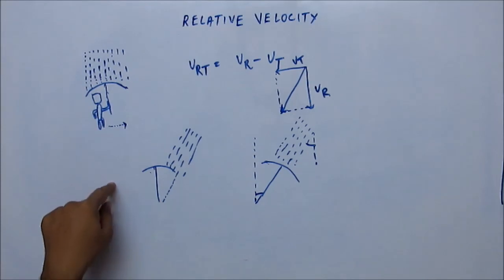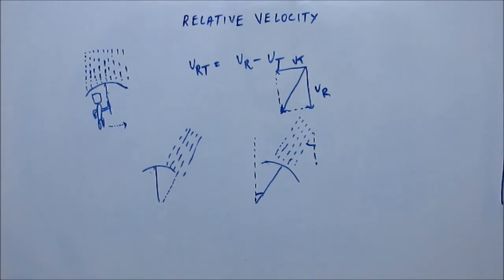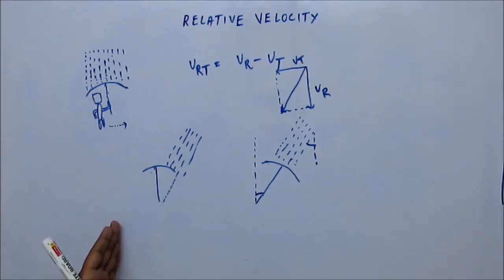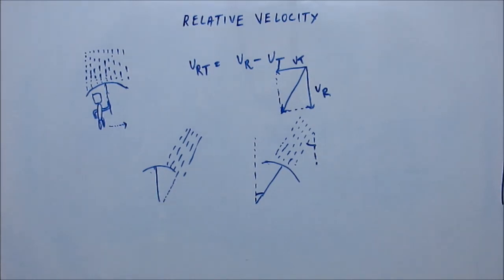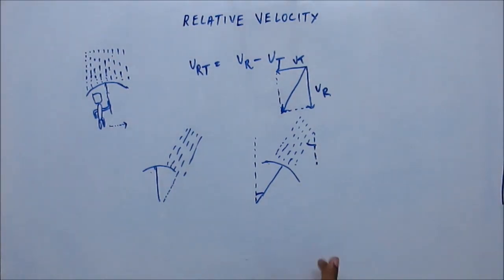Rain is coming vertically down, you start moving, and you need to realize why your mind interprets it as the rain coming obliquely — when in fact the rain is still coming vertically downward. This is very interesting and may be the point where you actually develop a deeper interest in physics. Spend some time and figure it out yourself — what is the riddle here?